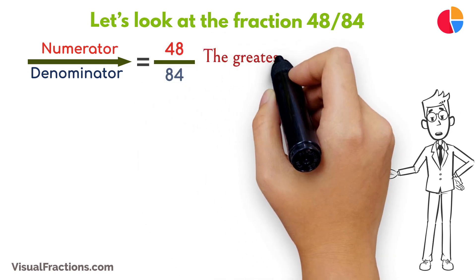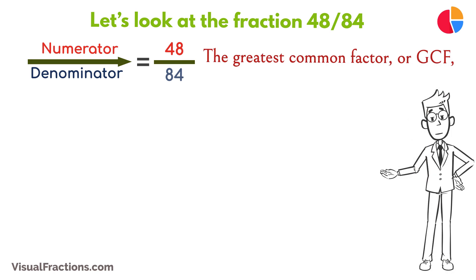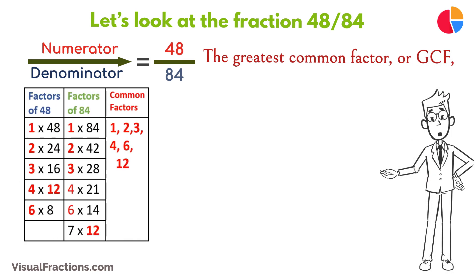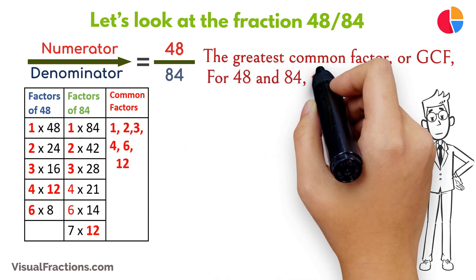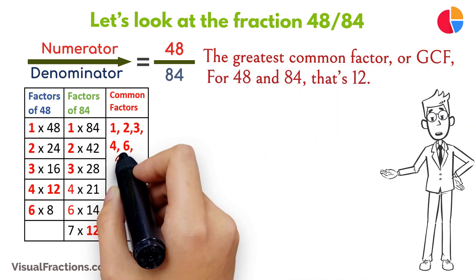The greatest common factor, or GCF, is the largest number that can evenly divide both the numerator and the denominator of a fraction without leaving a remainder. For 48 and 84, that's 12.